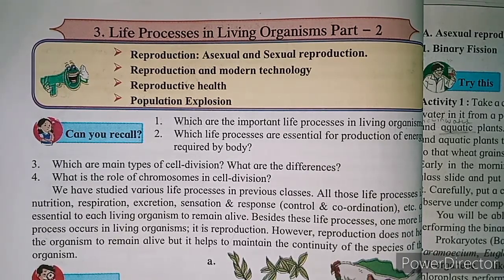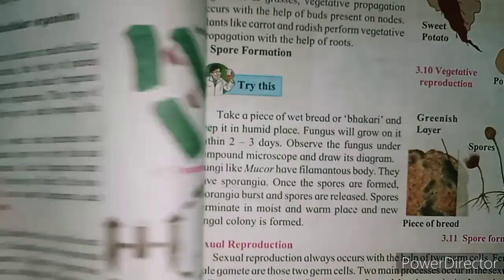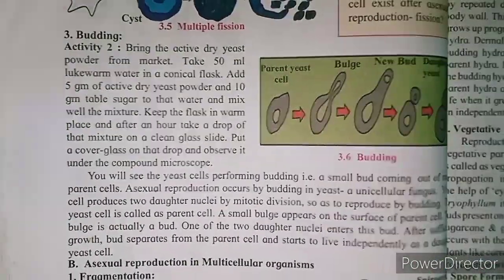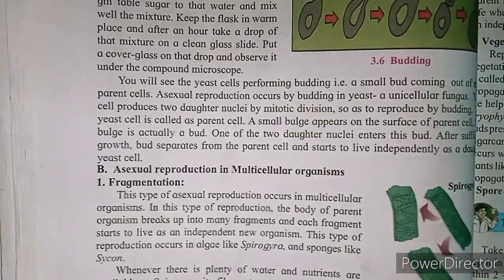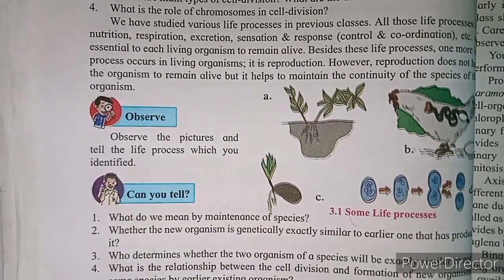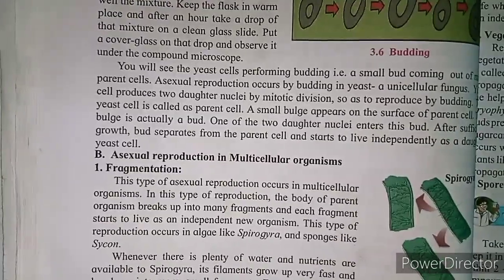Only one parent cell was involved — no two gametes. The types of asexual reproduction in unicellular organisms were: binary fission, with three examples — Amoeba, Paramecium, and Euglena — then multiple fission, and budding. In multicellular organisms there were five types.